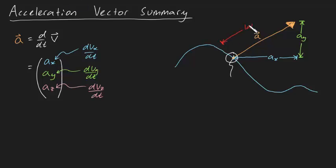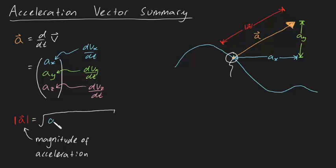The length of the acceleration vector is known as the magnitude of acceleration, and is given by the square root of ax squared plus ay squared plus az squared.